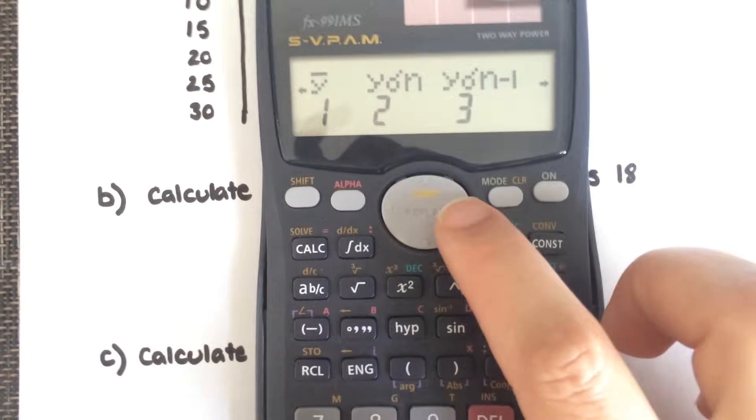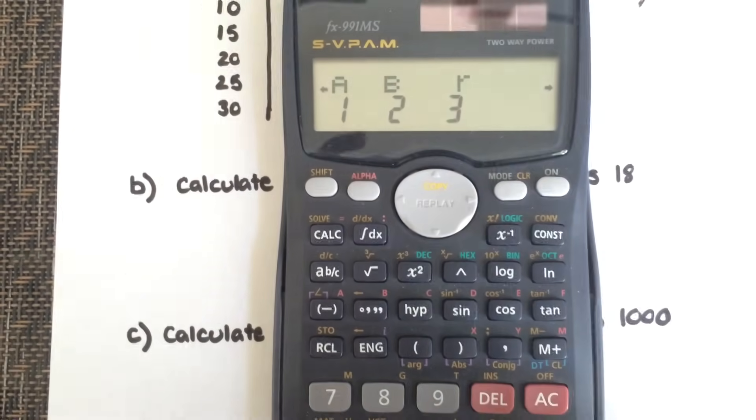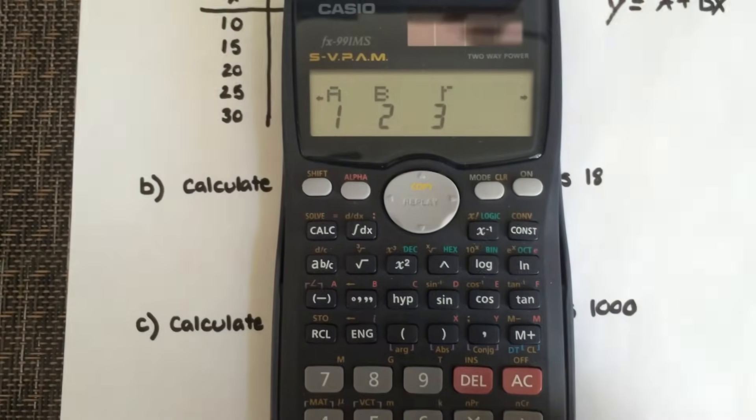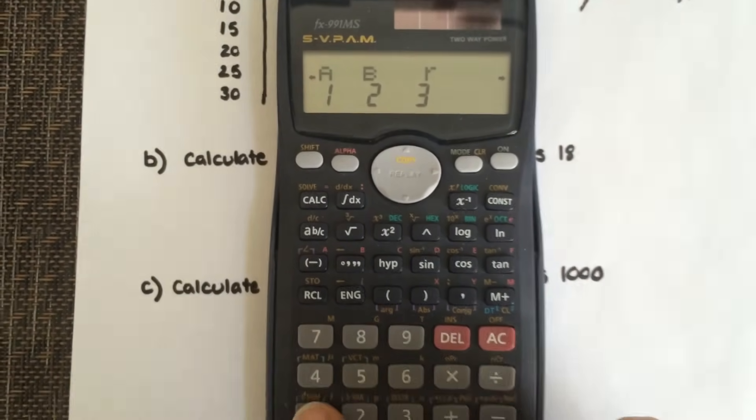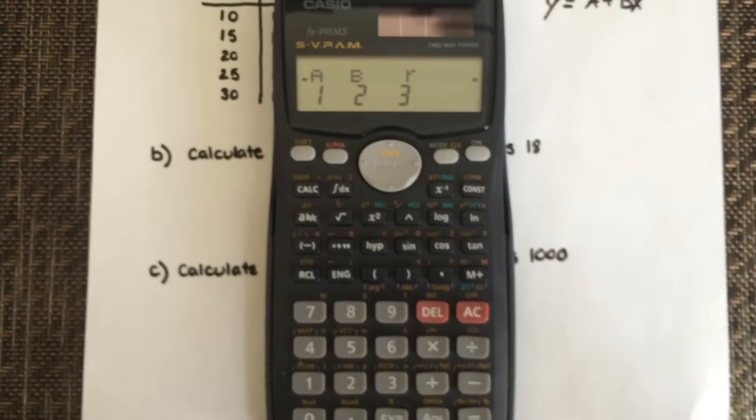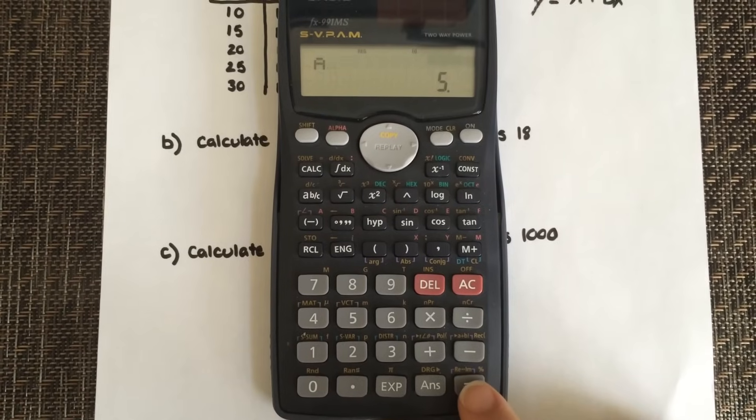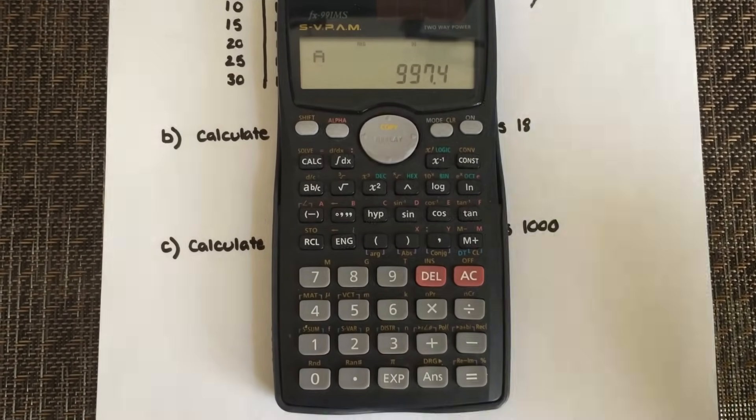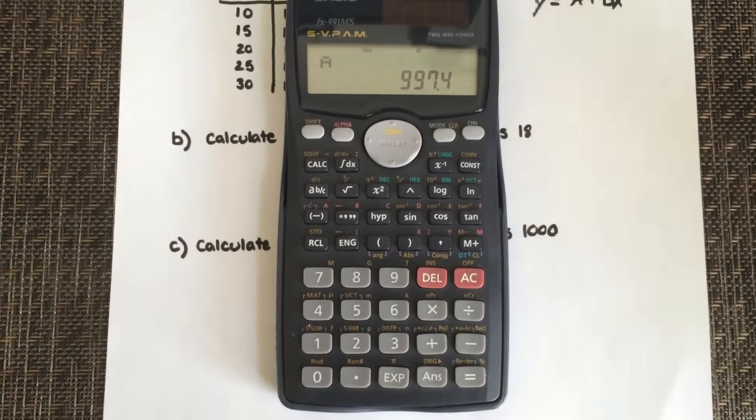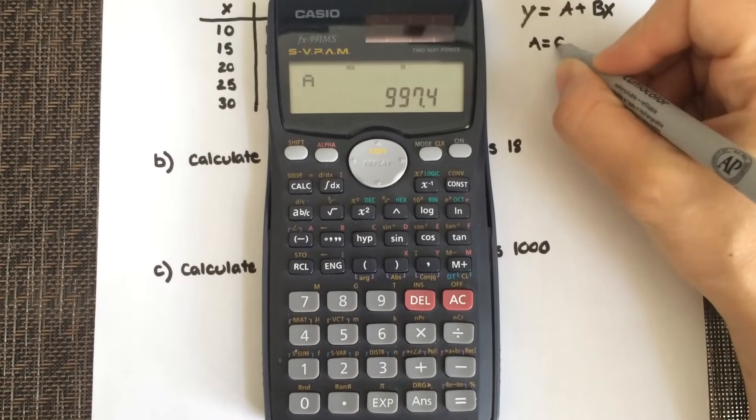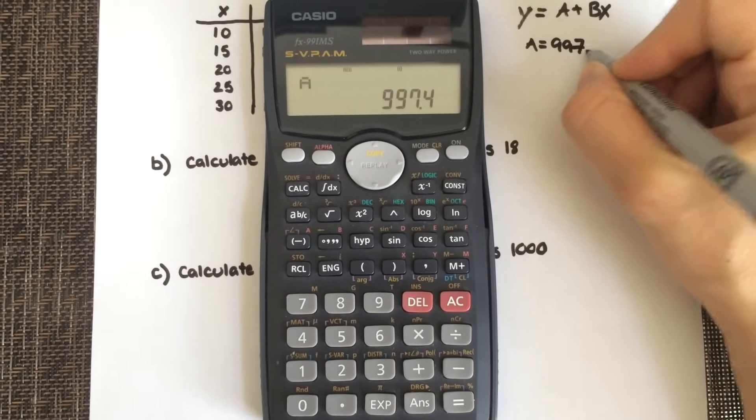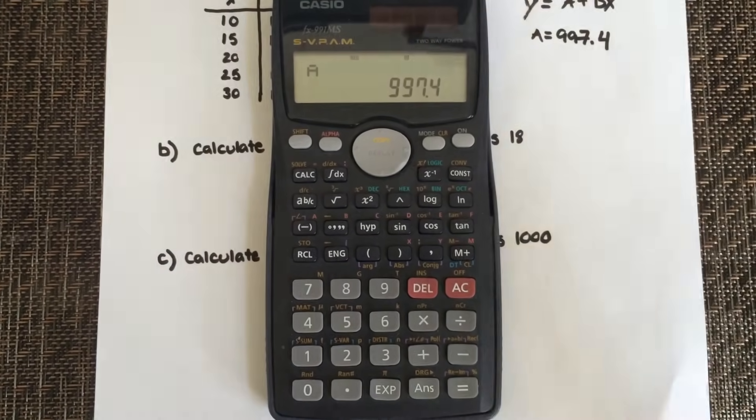Right, 1, 2. There you see a, b, and r, which is all three values that we need. So you're going to select 1 to get a, and hit equals. So once you hit equals, it will give you your a value. So it's just giving me my a value, 997.4.